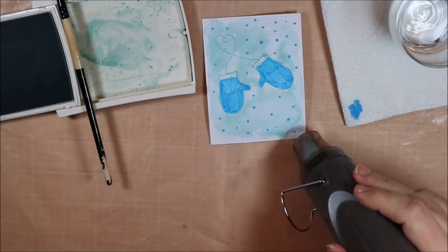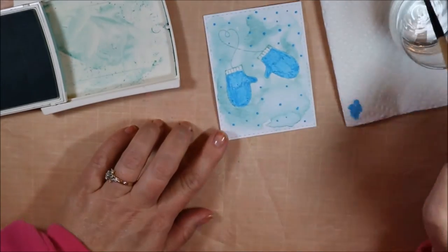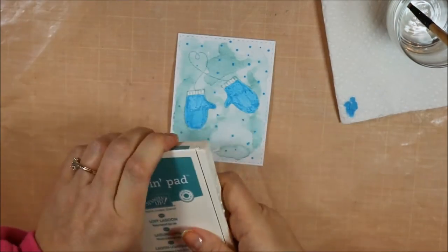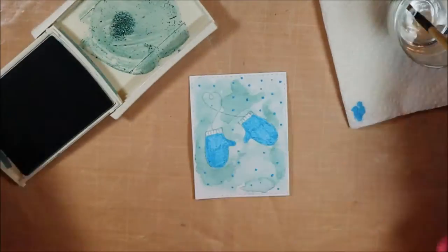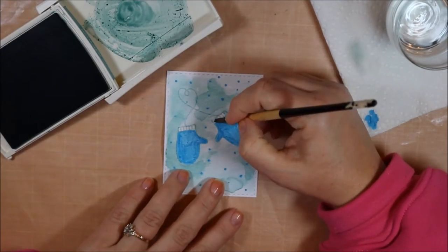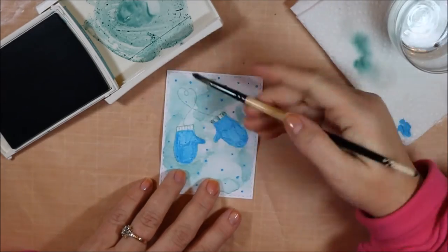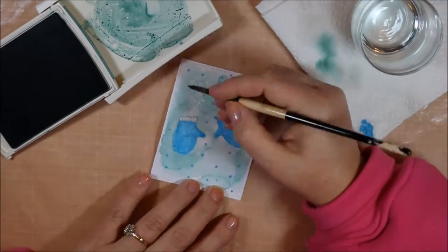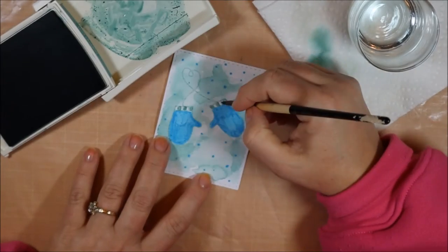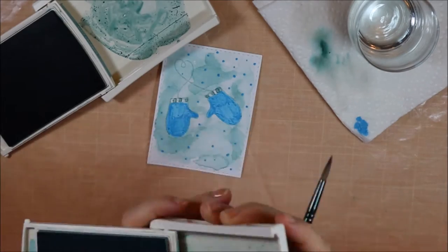I'm going to bring my heat tool in to kind of set this color so I can come in with some even darker color. I'm adding dark right near the mittens so that they really pop out. And then I'm going to paint the top of my mittens with this Lost Lagoon. This is the color I'll end up stamping in. And I was going to leave it white and just do every other stripe here, but I messed up. And so I'm going to end up doing every other stripe Lost Lagoon, and the other will be Soft Sky.